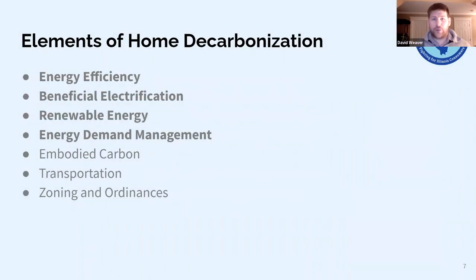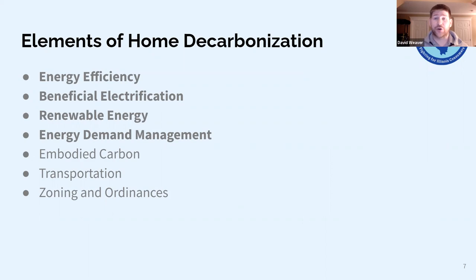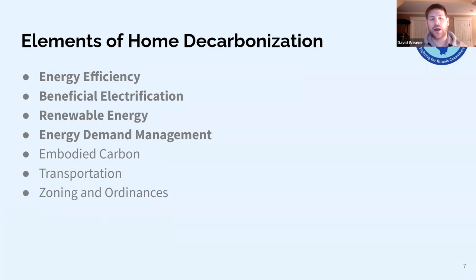There are many elements of home decarbonization: energy efficiency, beneficial electrification, renewable energy, and energy demand management — we're going to cover all of those today. Other elements include embodied carbon — for instance, some methods of insulating your home have extremely high carbon footprints to manufacture. Transportation and zoning ordinances also play into home decarbonization. But for today, we're going to focus on the top four.